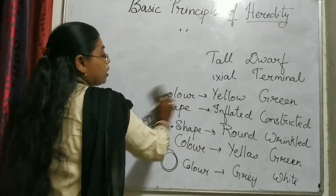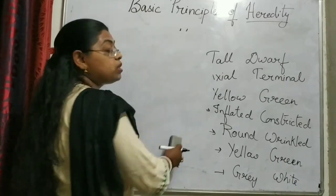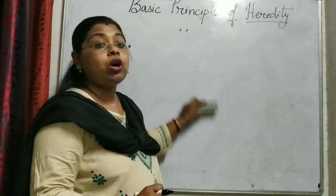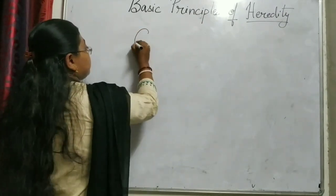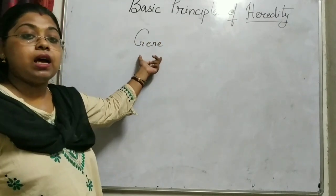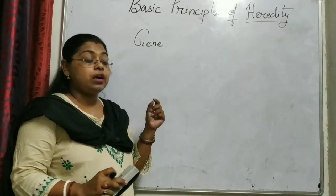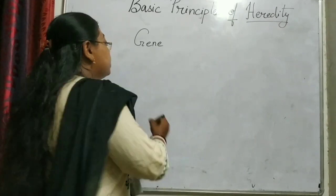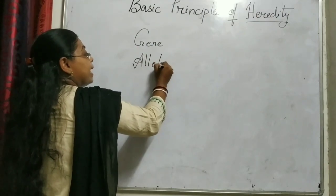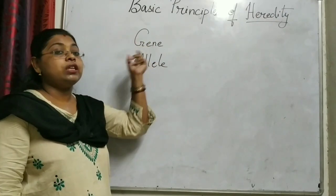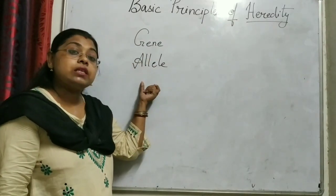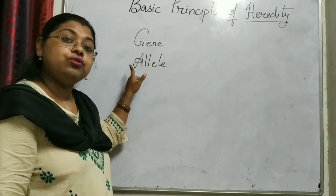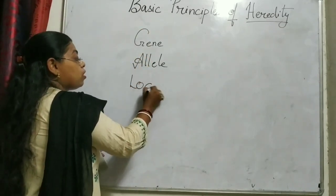After this we will look at some terms which are important to study genetics. The first term is gene. A gene is a sequence of DNA which encodes for a protein. The second term is allele. Every gene has 2 contrasting characters, and these contrasting characters are known as alleles.